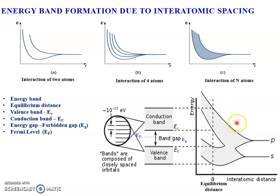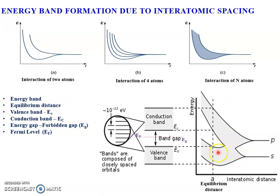If you take an atom having outermost orbits s and p, whenever atoms come closer, both the p orbital energy level and the s orbital energy level split into n energy levels, giving a band of energy levels for the p orbital as well as the s orbital. But at the equilibrium distance, we can observe stable energy bands.